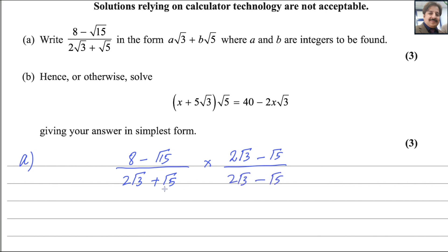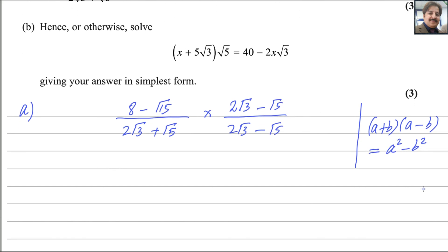Now in the denominator it becomes a difference of two squares — like a plus b times a minus b. This is always equal to a squared minus b squared. This is a, this is b — a plus b and a minus b.